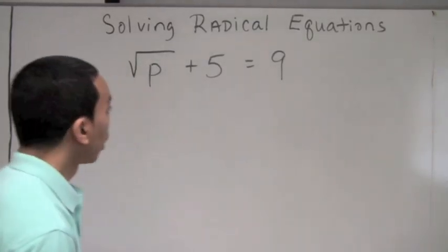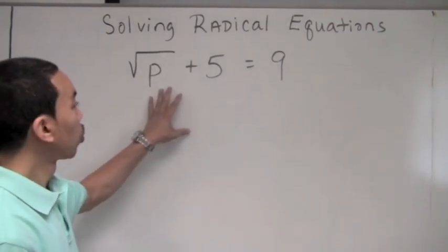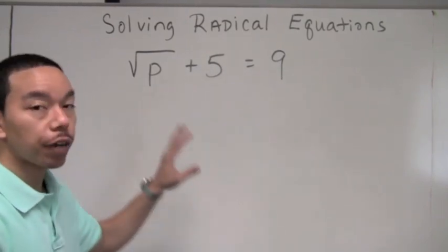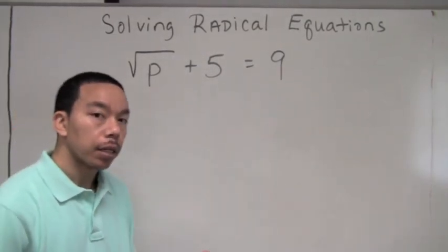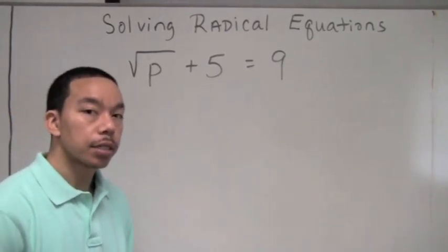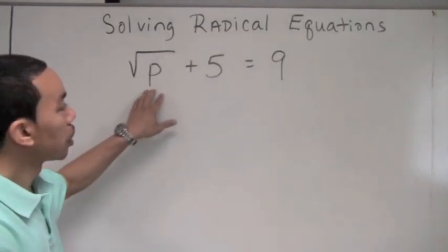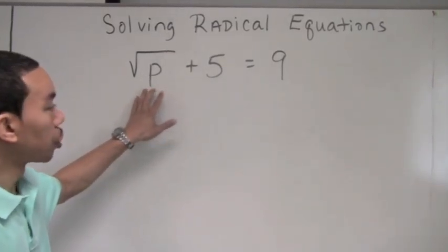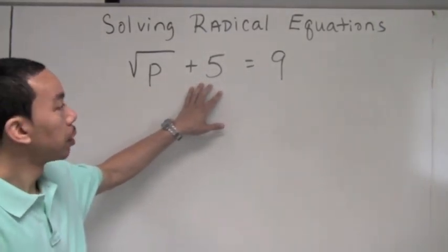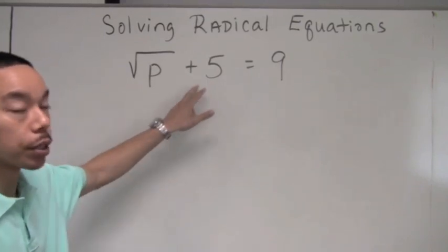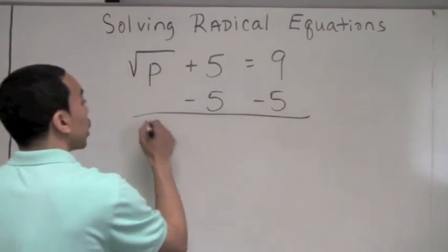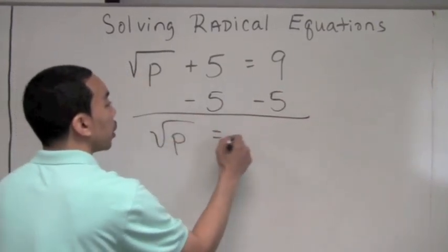Let's try an example. We have the radical equation: square root of p plus five equals nine. The first step says to isolate the radical term — that is the term with the radical. To isolate it, we have to get rid of the positive five by subtracting five from both sides, and we get square root of p equals four.